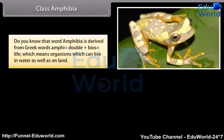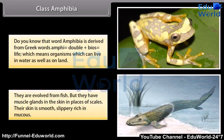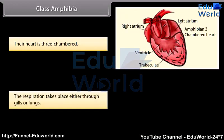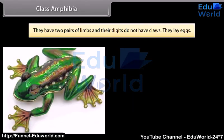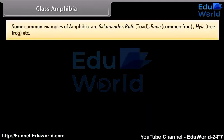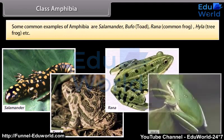Class Amphibia. The word Amphibia is derived from Greek words: amphi, meaning double, plus bios, meaning life — meaning organisms which can live in water as well as on land. They are evolved from fish, but have mucous glands in the skin instead of scales. Their skin is smooth, slippery, and rich in mucus. Their heart is three-chambered. Respiration takes place either through gills or lungs. They have two pairs of limbs and their digits do not have claws. They lay eggs. Some common examples are Salamander, Bufo (Toad), Rana (Common Frog), and Hyla (Tree Frog).